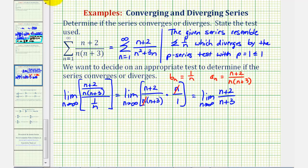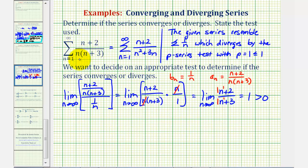In this form, since the degree of the numerator and denominator are the same — both degree one — this limit equals the ratio of the leading coefficients, which is one divided by one, equal to one, which is greater than zero. So because we compared the given series to a known diverging series and this limit is greater than zero, we've just shown that the given series is also divergent.